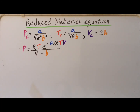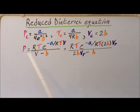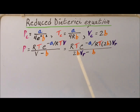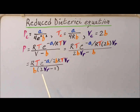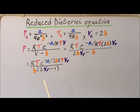Now we will begin our transformation of the standard equation into the reduced equation by using the fact that the volume is equal to the critical volume times the reduced volume. This gives us that the pressure is equal to RT times e to the minus A over RT times 2B times V sub R, divided by 2B times V sub R minus B. We notice a factor of B in the denominator, so we factor that out, giving P equal to RT e to the minus A over 2B RT V sub R, divided by B times the quantity 2V sub R minus 1.